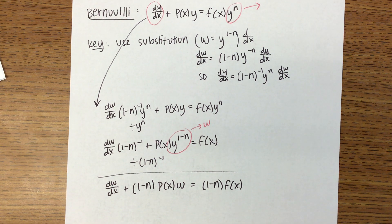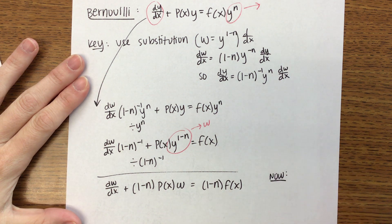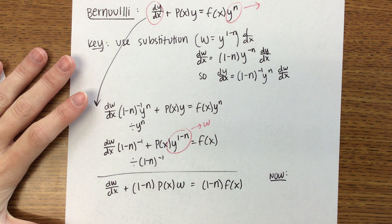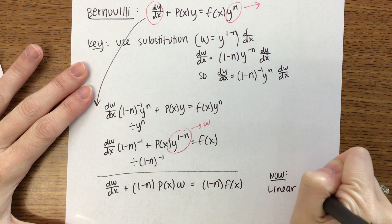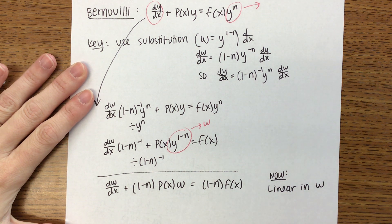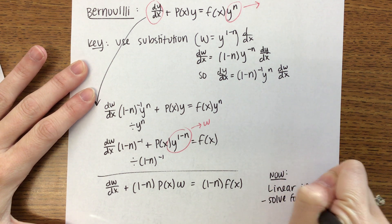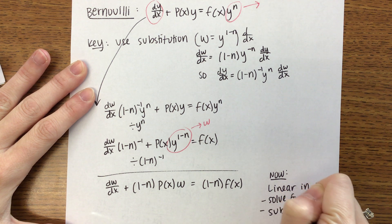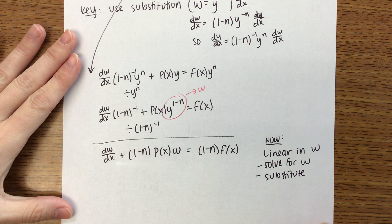Do we know how to solve this? What type of equation is this now? Linear. So now we are linear in terms of w, so we will solve for w, and then we will substitute back so that we end up in terms of y rather than w.